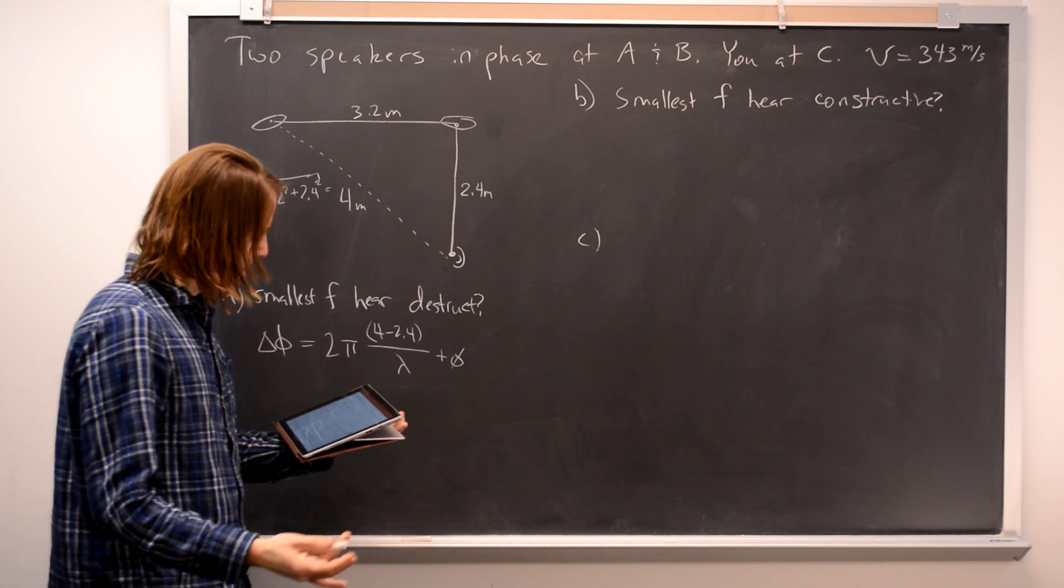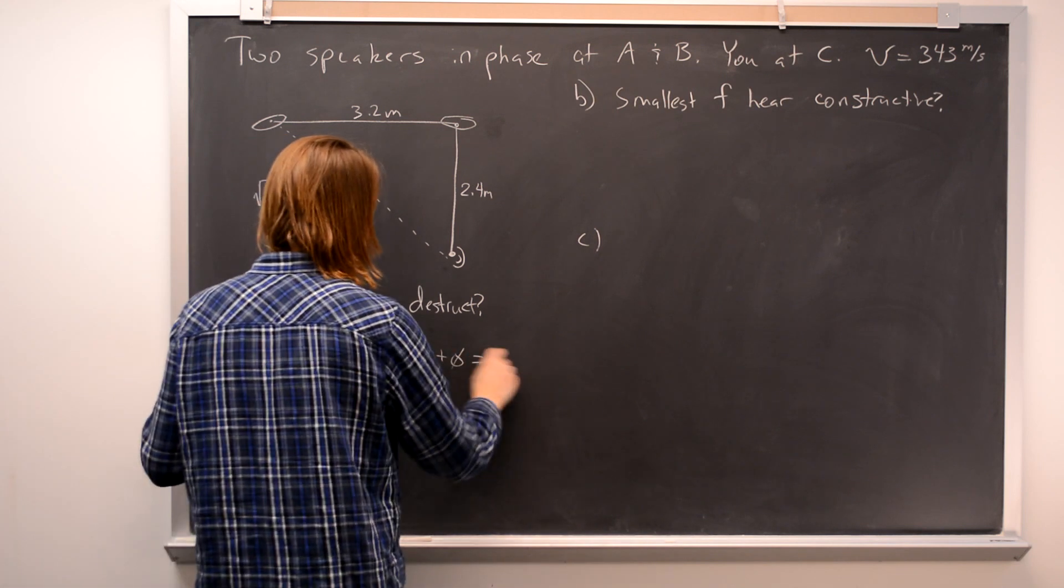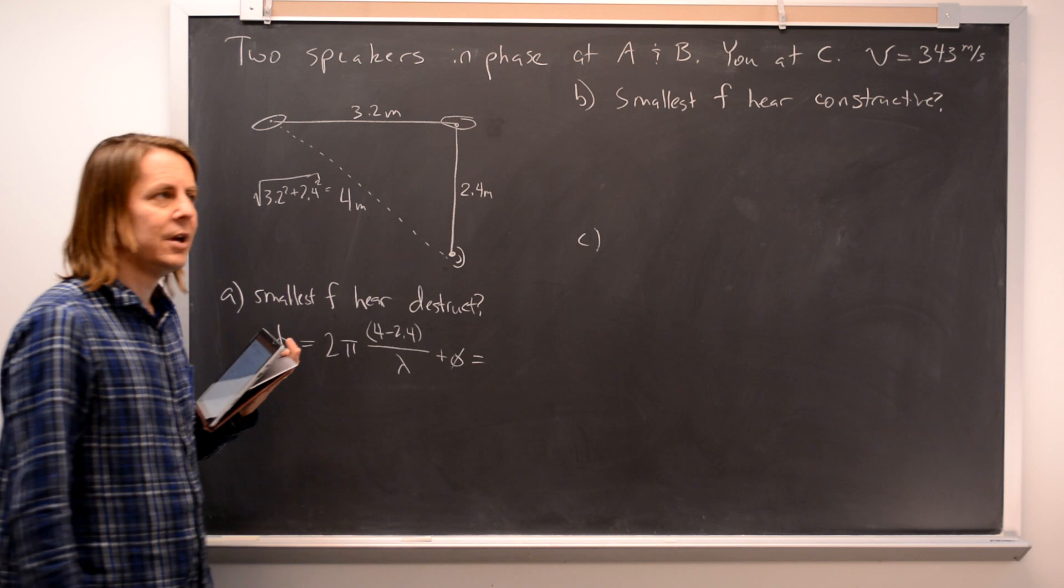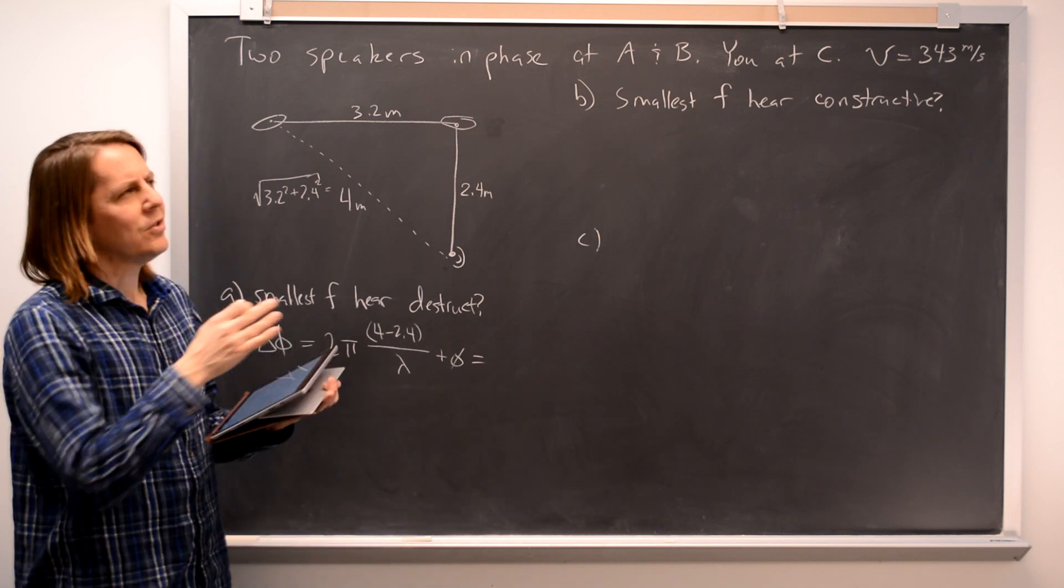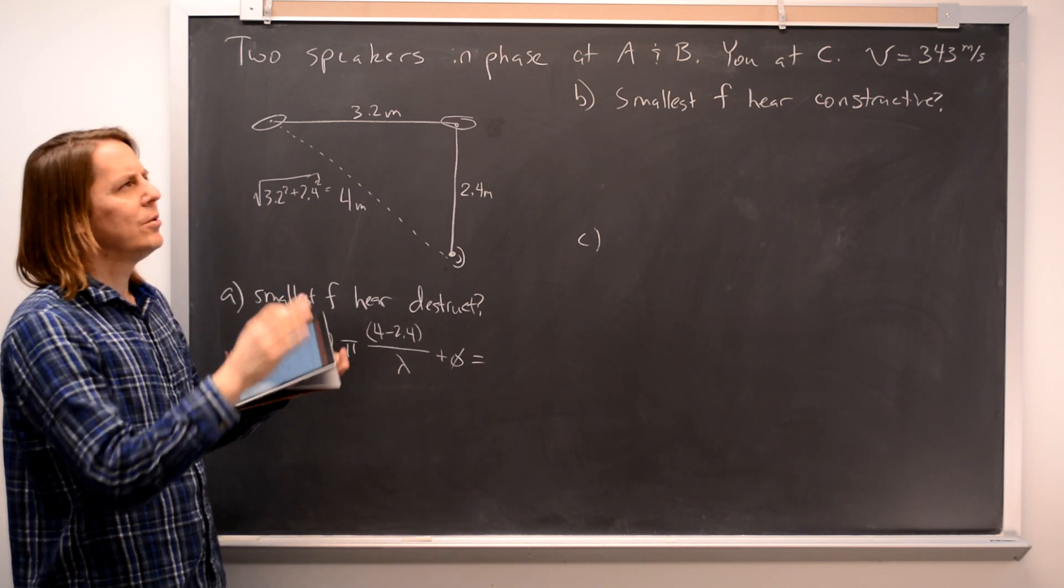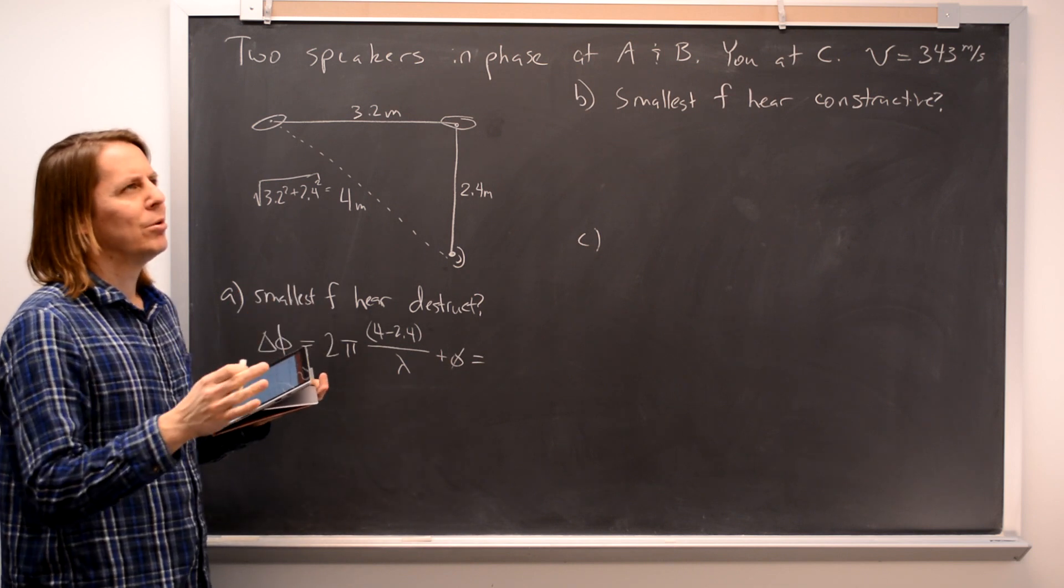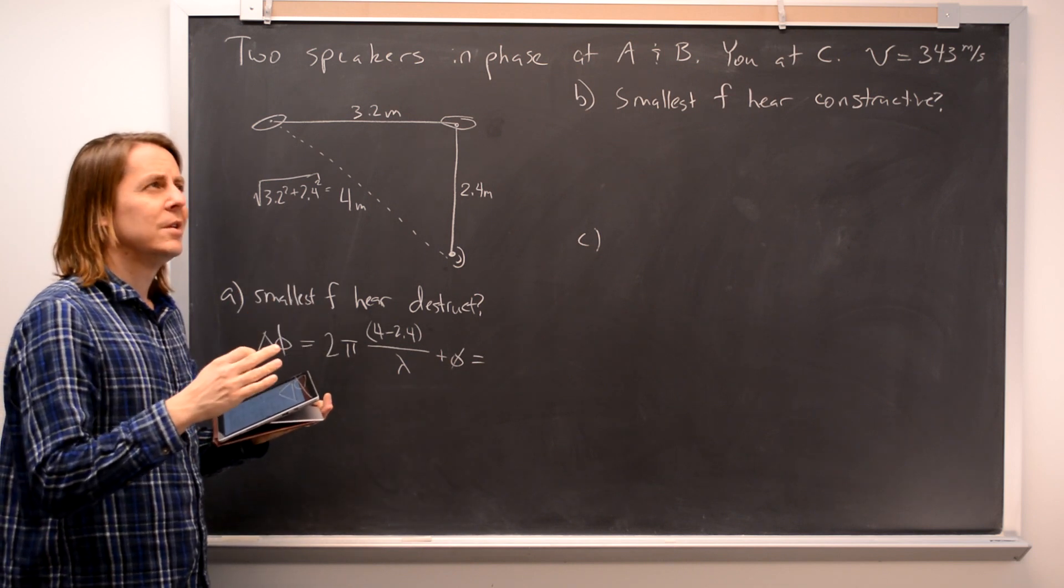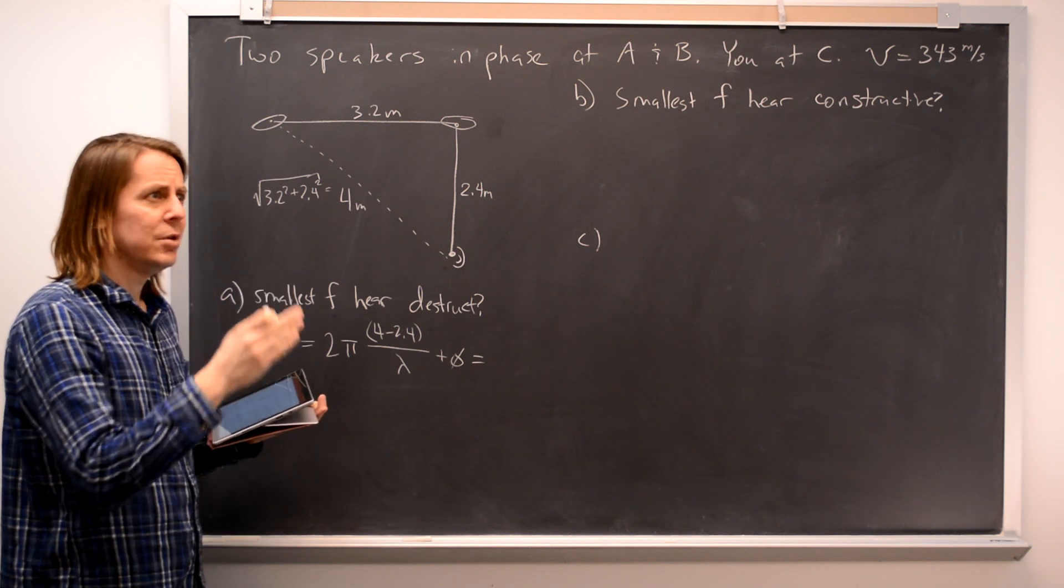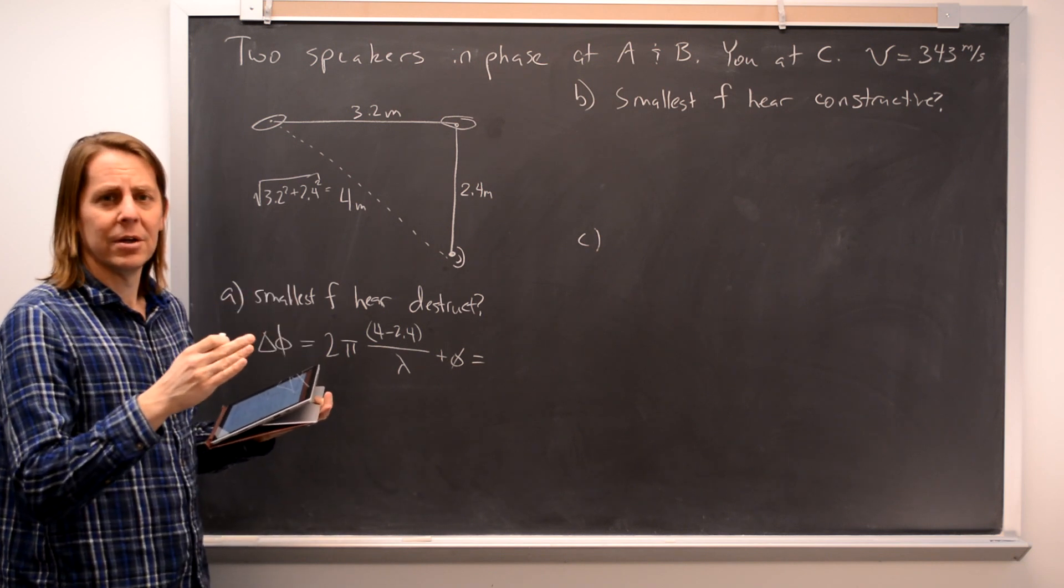And then this has to be equal to something to give us destructive interference. So if you're doing standing waves and you're trying to get open-closed, sometimes you have to have odd numbers here. We want π, 3π, 5π, like that.